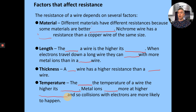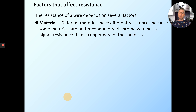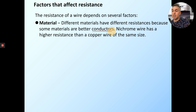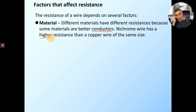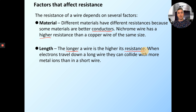Let's check those answers. Different materials have different resistances because some materials are better conductors. Nichrome has a higher resistance than copper of the same size. If you're a better conductor, you'll have a lower resistance; if you're a worse conductor, you'll have a higher resistance. The longer a wire, the higher its resistance — you saw that in the experiment last time.